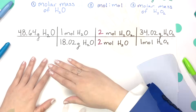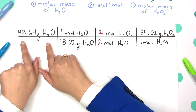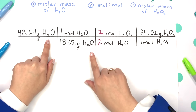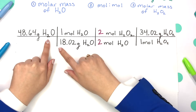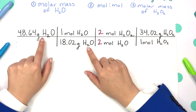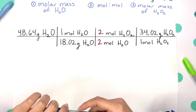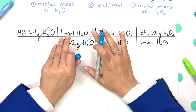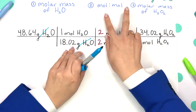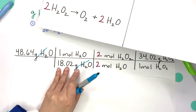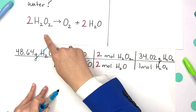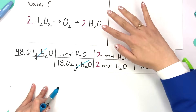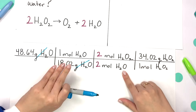Let's set this up. You want to put your given on top — that's what you always start with. So we have our 48.64 grams of water, and we're going to use our first conversion factor: the molar mass of water, which is 18.02 grams. We align these two across from each other so we can cancel out our grams of water. We're now left with moles of water, and we'll go back to our balanced equation for the mole-to-mole ratio. Looking at the balanced equation, we see two moles of hydrogen peroxide per every two moles of water.